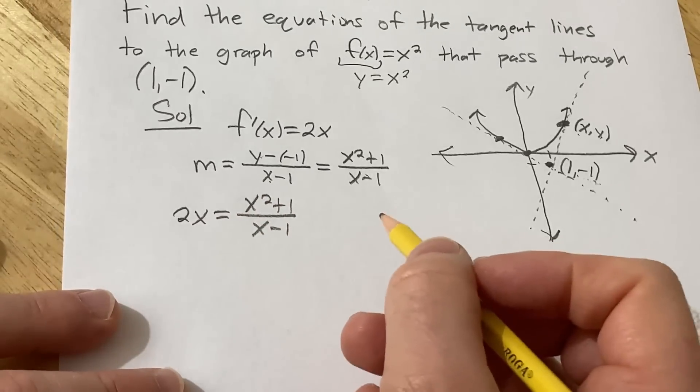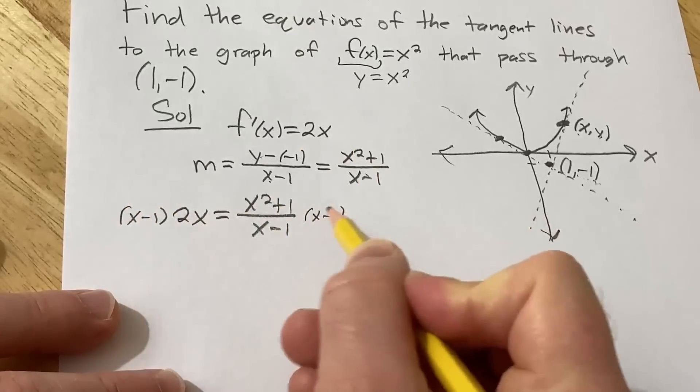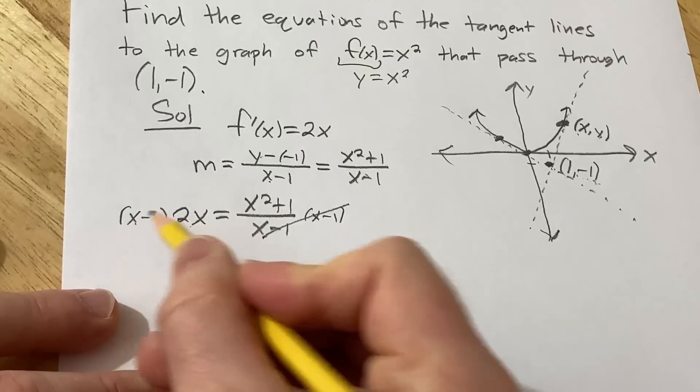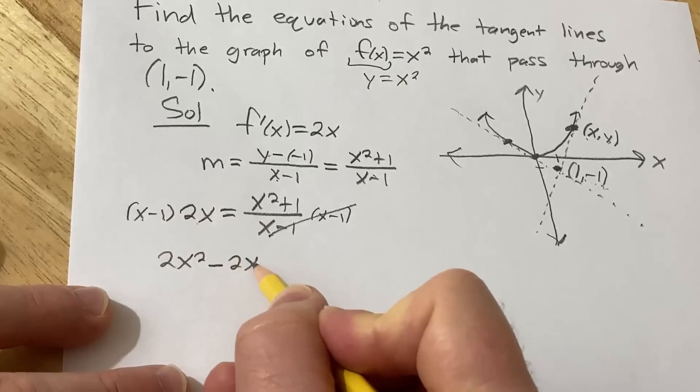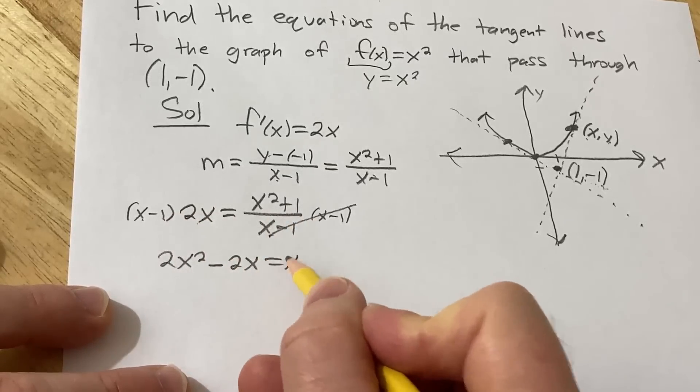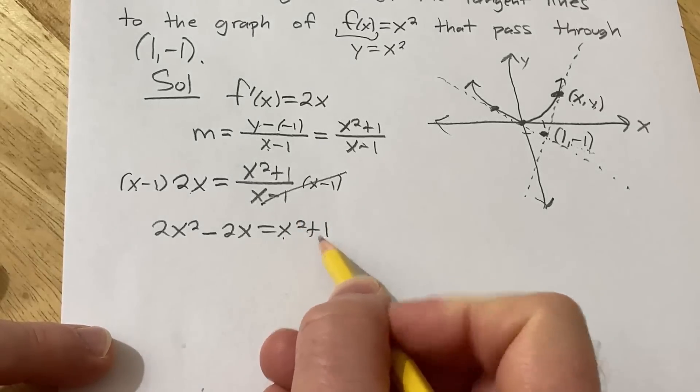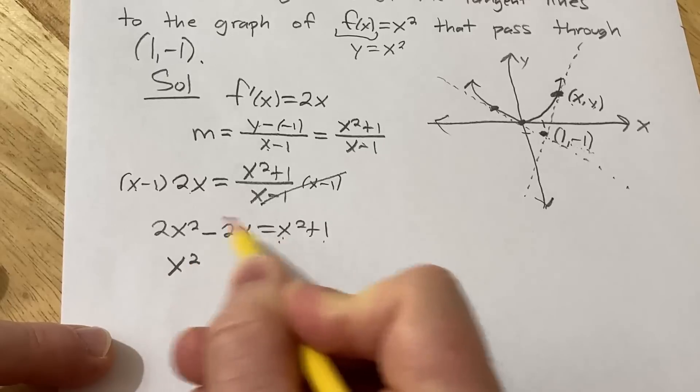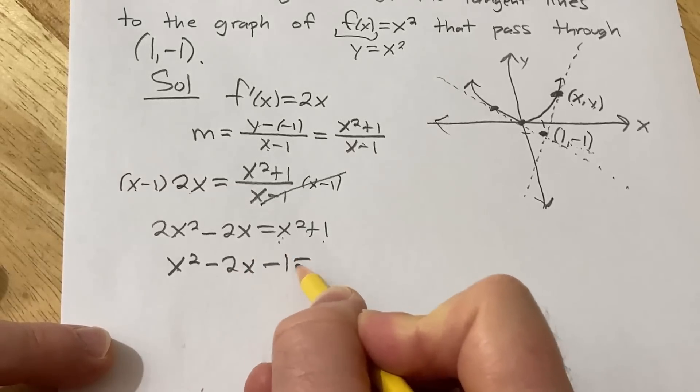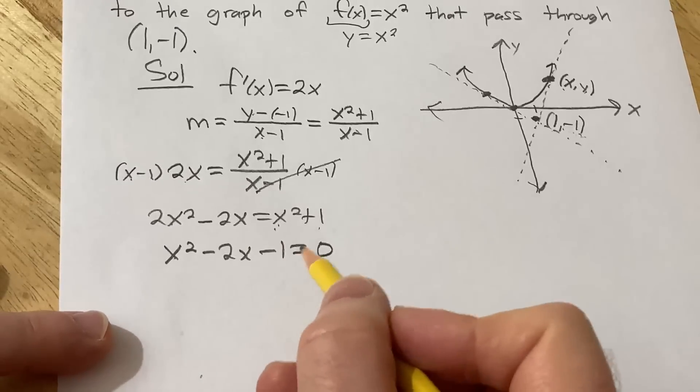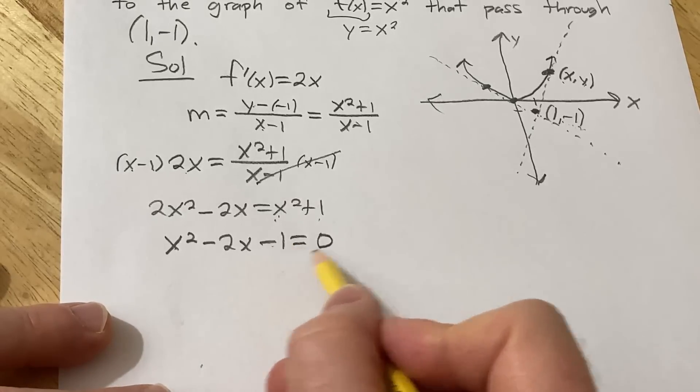And now here's the really cool part. This is the slope and this is the slope. Therefore, they're equal. So we have 2x equal to (x² + 1)/(x - 1). Let's go ahead and try to solve this for x. So I'm going to multiply both sides by x minus one. Boom, so we get, I'm going to distribute 2x times x is 2x². 2x times minus one is minus 2x. Then here we have x² + 1. Let's set it equal to zero and try to solve. Subtract x² and subtract one. We will get x², right? Minus x² minus x² gives us x² minus 2x. Subtract one and you get that.